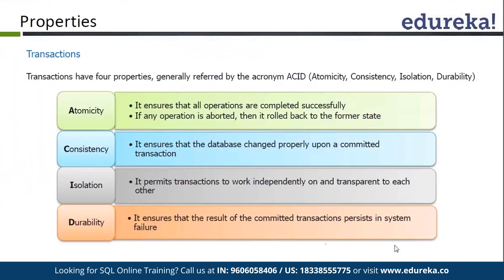C stands for Consistency. It simply means either the transaction is processed completely or it is not processed at all, so the database remains consistent. For example, if we are updating data of three tables in a transaction and I have updated the first table but got an error while updating the second table, even the data for the first table will be rolled back. The data will remain consistent — there is no chance that data will be inconsistent.